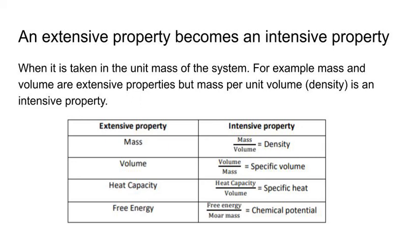Extensive property mass upon volume is density, which is our intensive property. Second example: volume upon mass is equal to specific volume — that is again an intensive property. Heat capacity when divided by mass gives specific heat — usma dharita ko dravyamaan se divide karo to vicious usma hoti hai, jo ki vicious gun hai. Free energy when divided by molar mass is equal to chemical potential — rasaynik vibhav, jo ki intensive property hai.